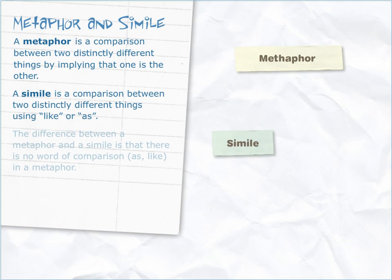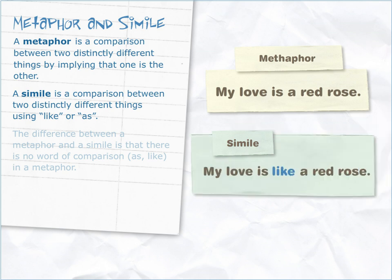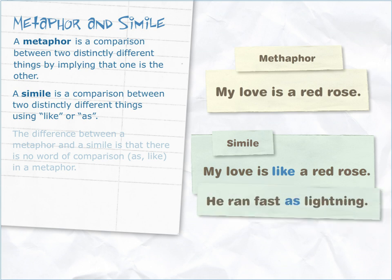Example: my love is a red rose. Used as a simile, my love is like a red rose. Or, he ran fast as lightning.